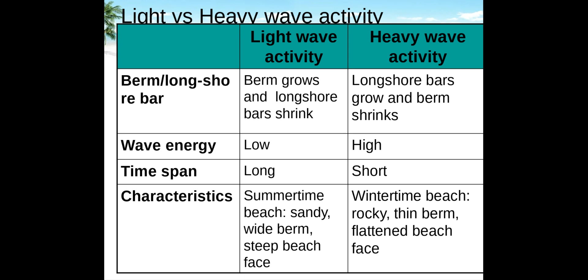This table shows light wave activity versus heavy wave activity. In light wave activity, the berm grows and the longshore bar shrinks; in heavy wave activity, the longshore bar grows and the berm shrinks — exactly opposite. Wave energy is low in light wave activity and high in heavy wave activity. Light wave activity characterizes a summertime beach: sandy with a wide berm and steep beach face. Heavy wave activity characterizes a wintertime beach: rocky, with a thin berm and flattened beach face, as seen in Maine, Washington, and Oregon.